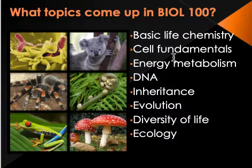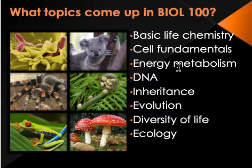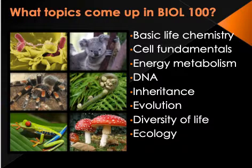What types of topics do we learn in Biology 100? These are just some — there are so many more, and you can flip through your textbook to see. But we will talk about some basic chemistry, basic cell things, how we get energy from food, DNA, inheritance, evolution, diversity of life, ecology, and a lot of human body content. So hopefully it will be really fun.